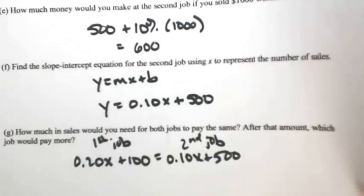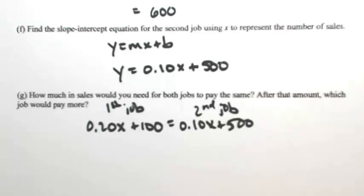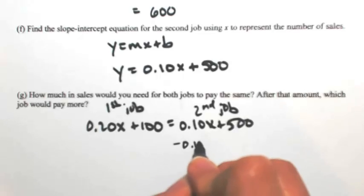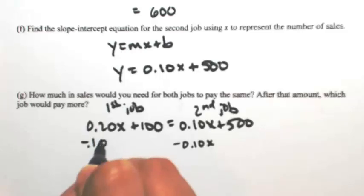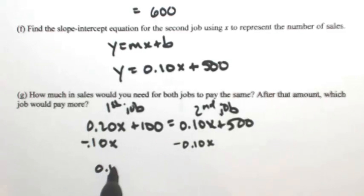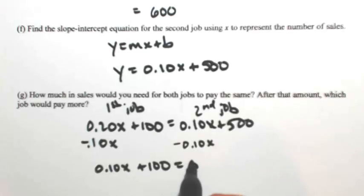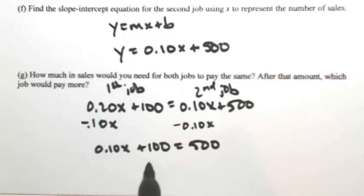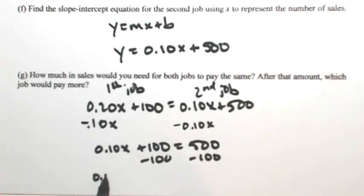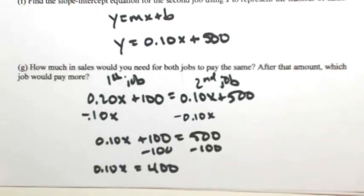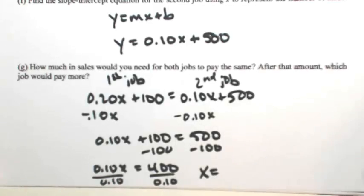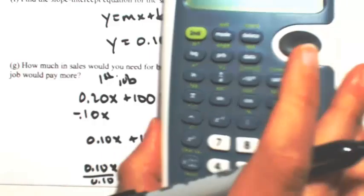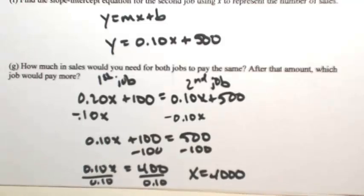We are trying to figure out when they are the same — this is just a linear equation, nothing complicated. I have an x on the left and an x on the right, so subtract 0.10x from both sides to get 0.10x on the left. Then subtract 100 to get 0.10x by itself, giving 400. Dividing both sides: 400 divided by 0.1 is 4,000. So if you make $4,000 in sales, both jobs pay the same.